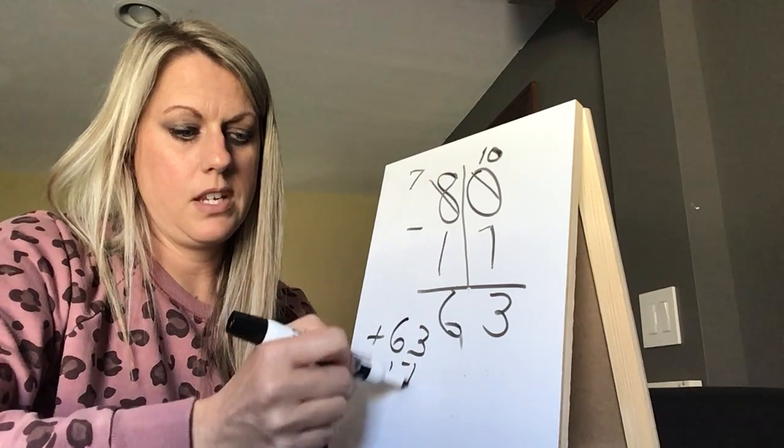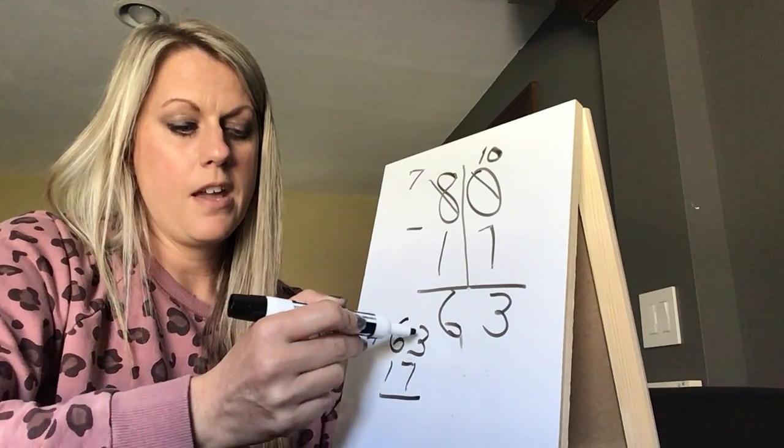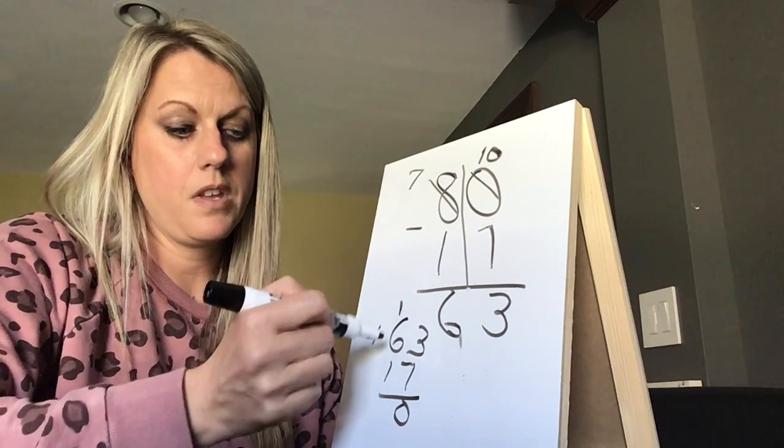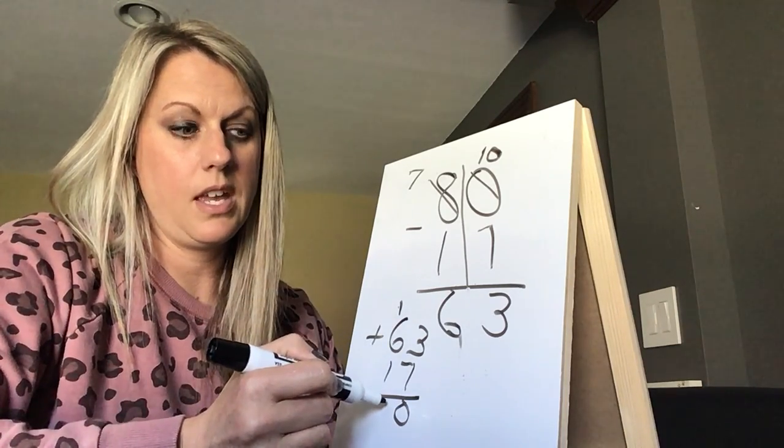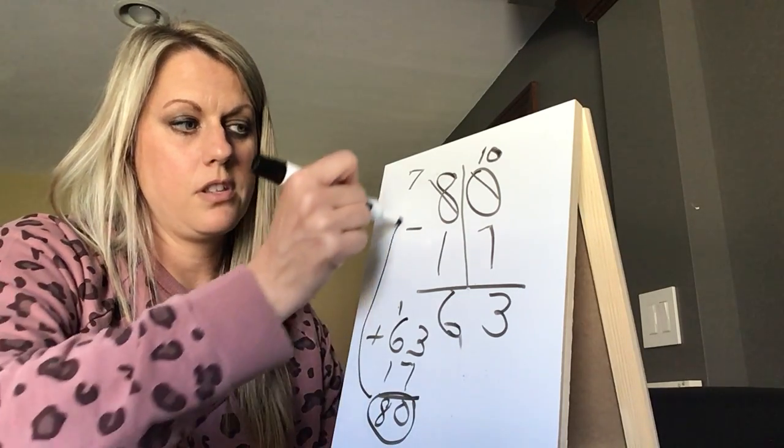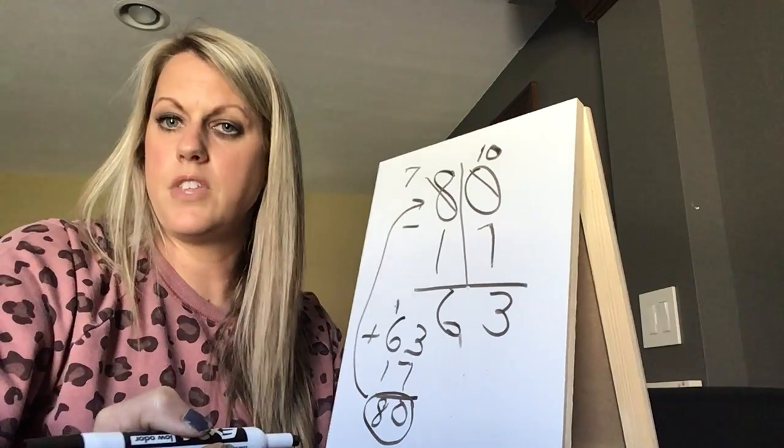63 plus 17. 3 plus 7 is 10, so I put the zero there and carry a 10. 6 plus 1 is 7, plus 1 is 8. And this number right here should match this number right here if you got the answer correct.